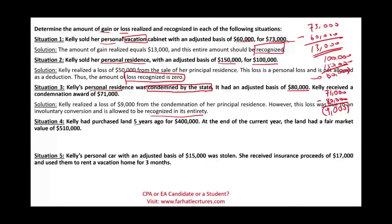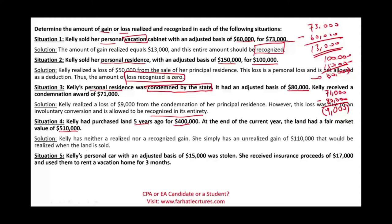Kelly purchased land five years ago for $400,000. At the end of the current year, the land has a fair market value of $510,000. Nothing has actually happened — there is an unrealized gain of $110,000. Kelly did not sell, so there is nothing to recognize. For tax purposes, unrealized gains are not taxable, and the same applies to unrealized losses. Note that for financial accounting under accrual accounting, a realized gain might be recorded, but not here.